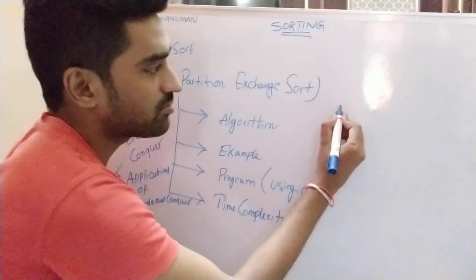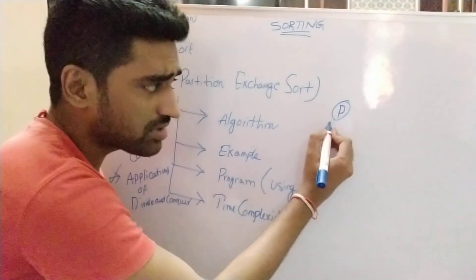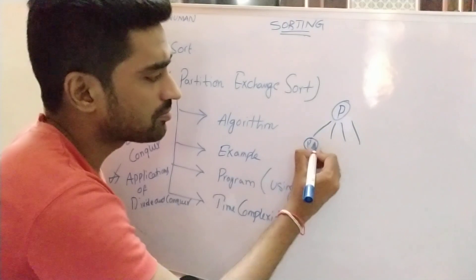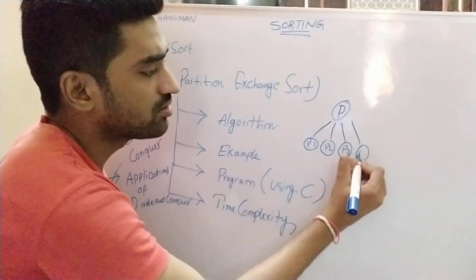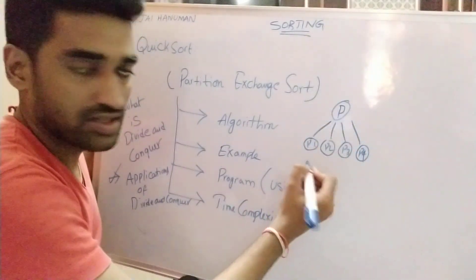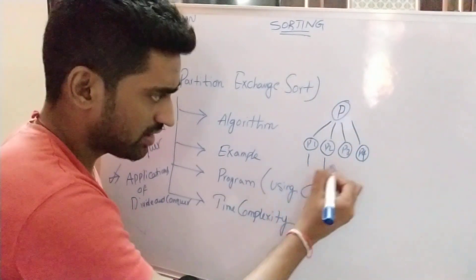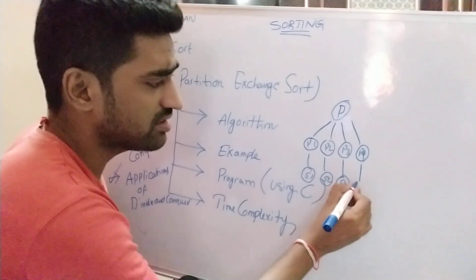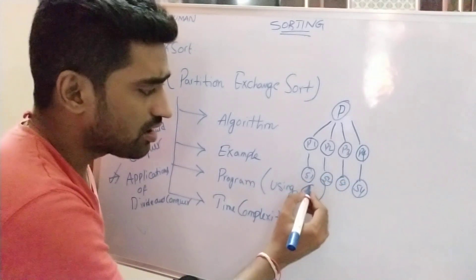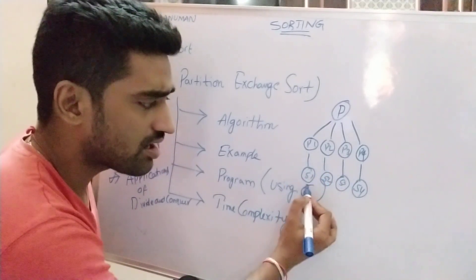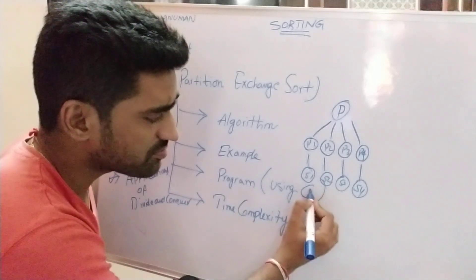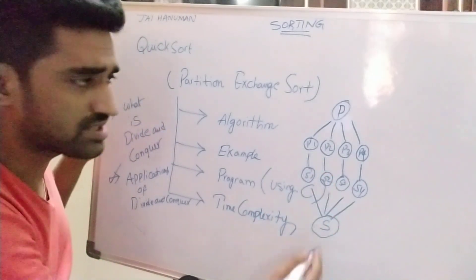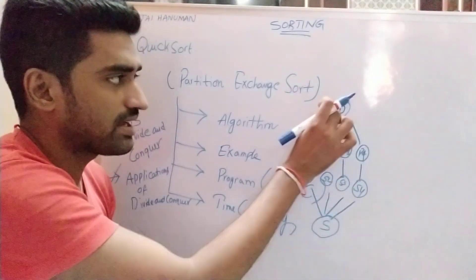In divide and conquer strategy, suppose we take problem P as our big problem. This big problem is divided into several sub-problems, for example P1, P2, P3, P4. For each sub-problem we find out the sub-solutions S1, S2, S3, S4. After finding the sub-solutions, we merge or combine all of them to get the original solution to the given problem.